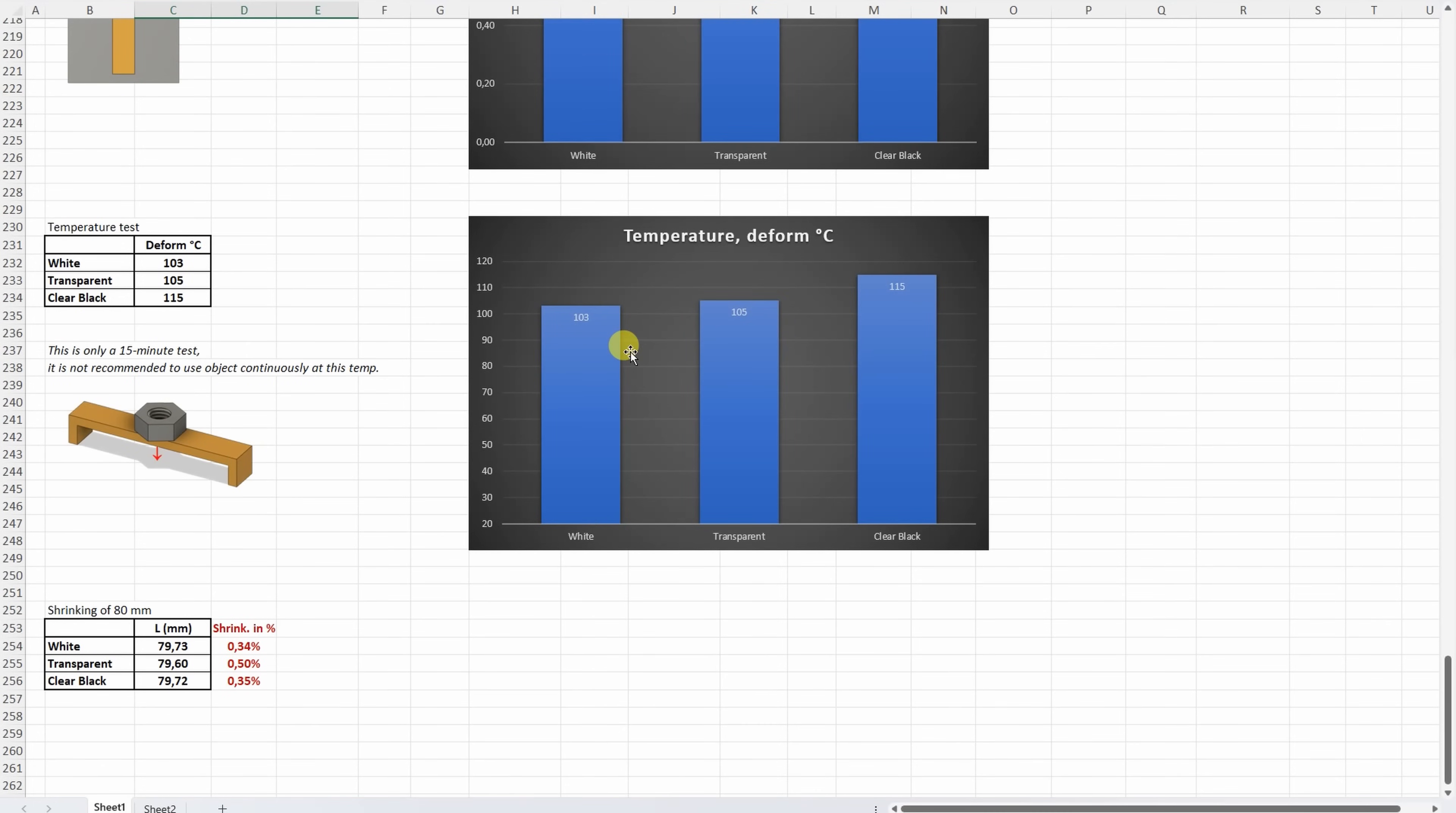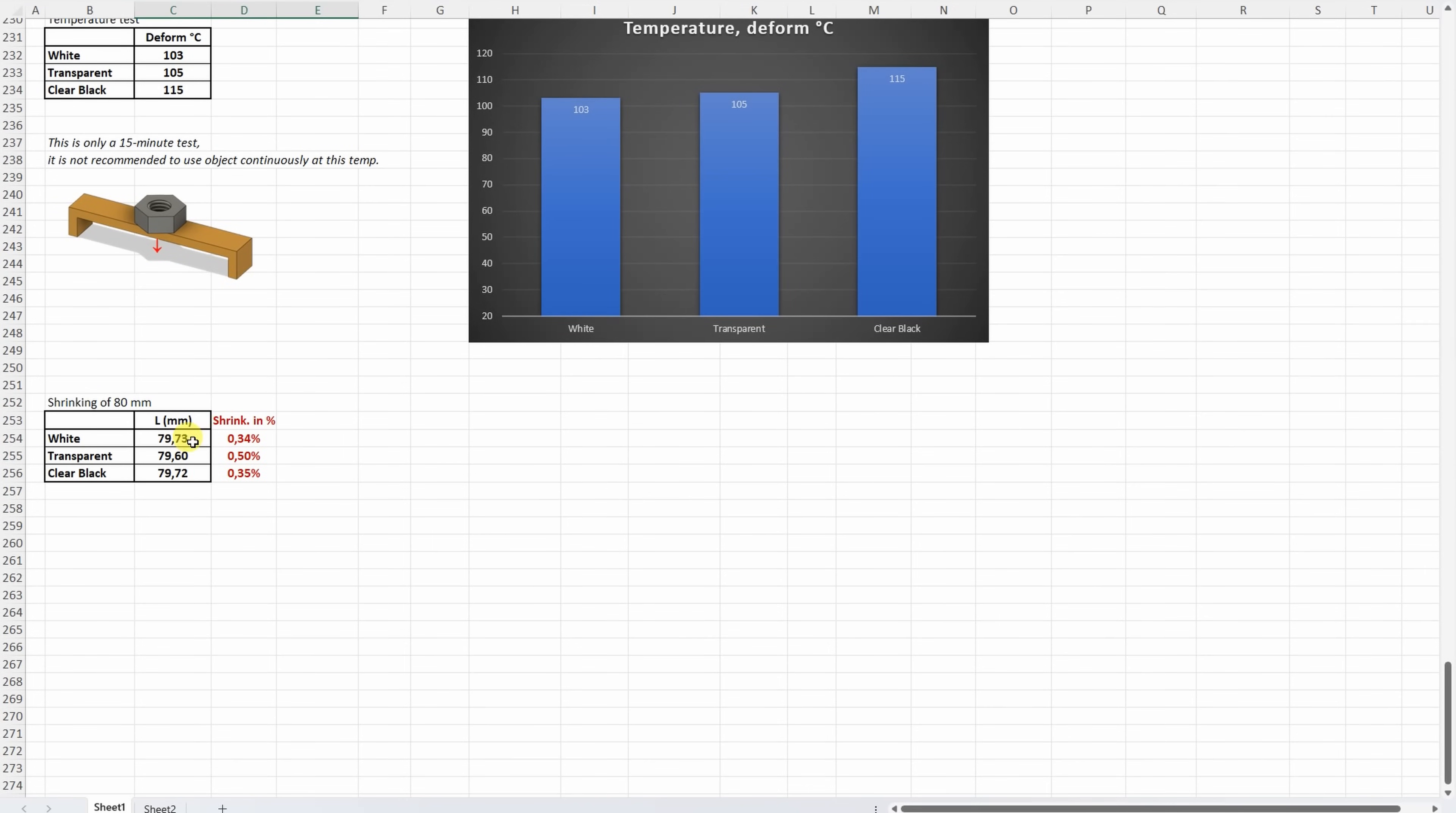On the temperature test, again we can see some differences between the colors. So the clear black was the best in this test compared to the other two. And yes, I measured the shrinking. Some minimal differences between the shrinking. So the transparent had a little bit more shrinking, very similar to ABS, compared to the other two.